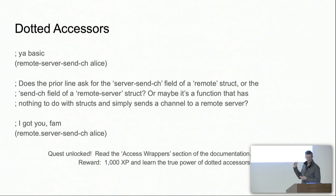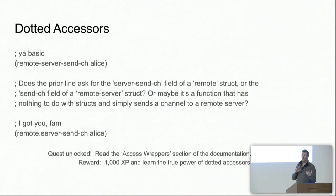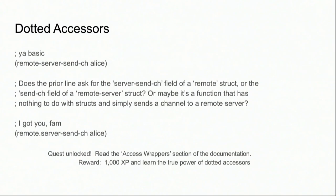Dotted accessors: look at the identifier 'remote-server-send-channel' — is it a function with a random name, an accessor pulling the server-send-channel field out of a remote struct, or an accessor getting the send-channel field from a remote-server struct? There's no way to tell by looking at it. Struct++ generates dotted accessors for you, so you can see it is a remote struct and the field name is server-send-channel. And if we have any gamers in the room, you'll recognize the tagline at the bottom.